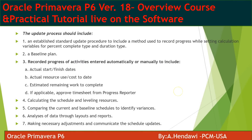The update process should include an established standard update procedure with the method used for recording progress. You should have the baseline plan — this is your reference, the one you use to measure delays. Record progress of activities entered automatically or manually. Add actual dates, add resources, estimate the remaining durations. If applicable, approve the timesheet. Calculate the schedule level and level resources — you can do this to check spikes in the resource. Compare the current schedule to the baseline to identify variances, analyze the data, and make any adjustments.